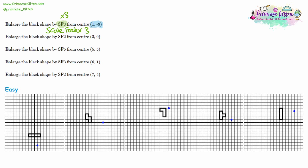Now we're not going to worry about labeling these because all the centers of enlargement are labeled on the diagram. So for question one, you can see the little blue dot — it is from the center, one across and eight down. So the first thing we can talk about is that if we make the shape three times bigger, look at the measurements of the shape. Our rectangle is four across and one up. So we made it three times bigger: the one up would become three up, and the four across would become twelve across.